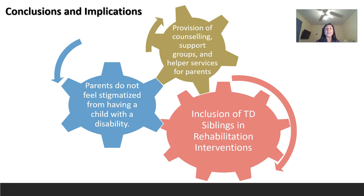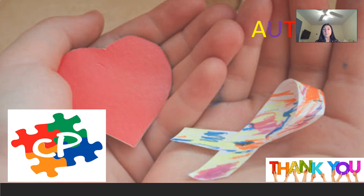In conclusions and implications, all these studies found that parents do not feel stigmatized from having a child with a disability. However, these parents do need counseling, support groups, and helper services for greater support. The inclusion of typically developing siblings in rehabilitation interventions would also be very helpful to assist them in supporting and understanding their siblings with autism spectrum disorder. Thank you very much — I enjoyed talking to you today and welcome your questions.